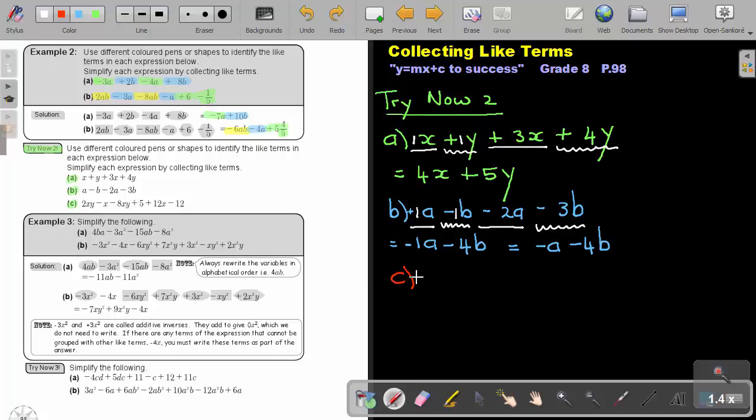So it was 2xy minus x minus 8xy plus 5 plus 12x minus 12. Look, my expression is having 1, 2, 3, 4, 5, 6 terms. So let's just mark our like terms.